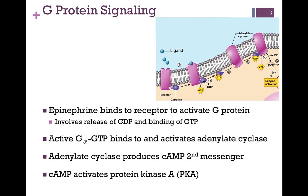Recall that epinephrine binds to its receptor — that's on the left of our figure — which induces a conformational change in that receptor, allowing it to interact with a membrane-anchored G-protein, which in turn activates the G-protein. This activation involves the release of GDP and the binding of GTP to its alpha subunit. The active G-alpha subunit then binds to and activates a membrane-bound enzyme, adenylate cyclase, stimulating it to produce cyclic AMP.